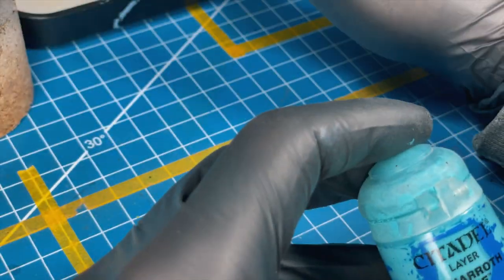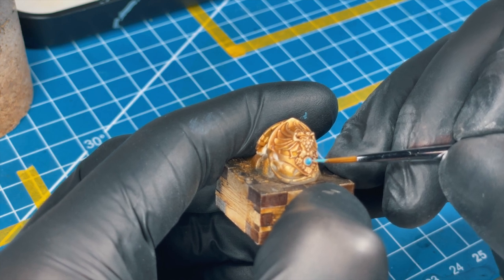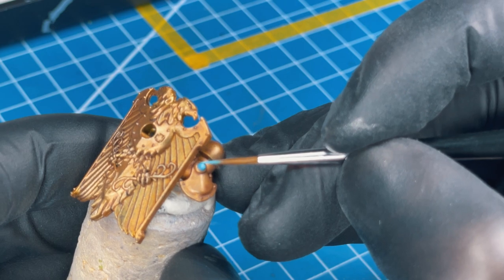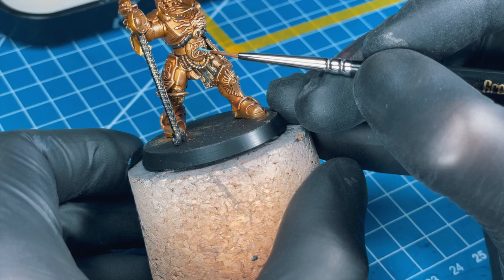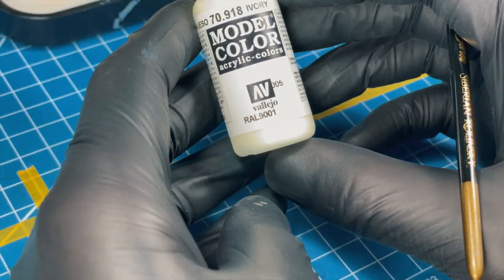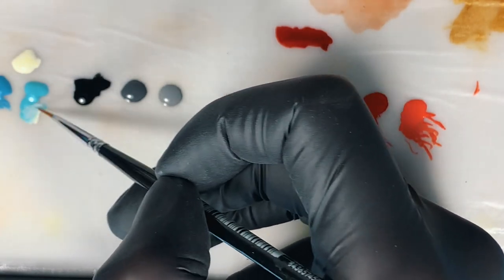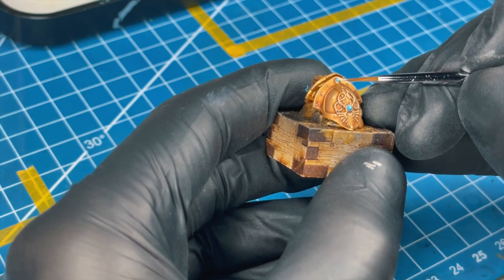Base coat is ready. Now it's time for the first highlight. Grab your Baharroth Blue and reduce the area that you paint to only 30, maybe 40 percent of the previously painted area. Try to put it in a top corner of the painted gem. Now I'm just picking the ivory from Vallejo, and I place a little dot in every gem to make it a little bit brighter and add some interest.